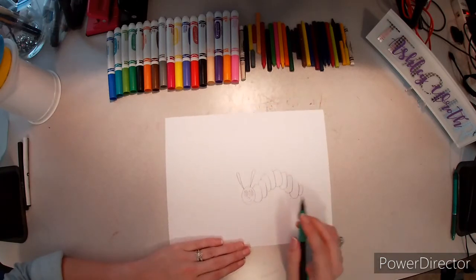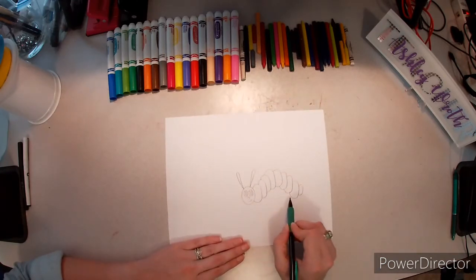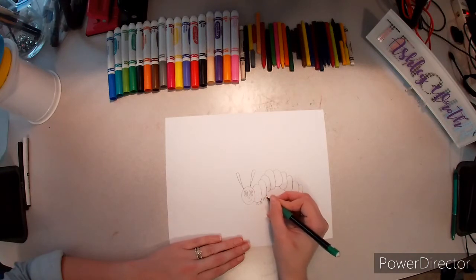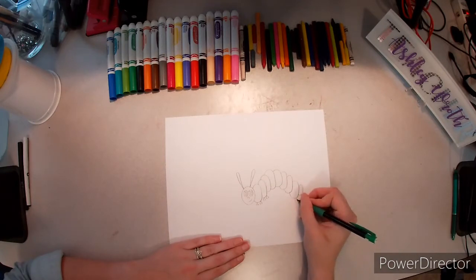Now, we're going to do four feet on the front and two feet on the back. And for his feet, they always look like little triangles. One, two, three, four, and then two on the back. One, two.